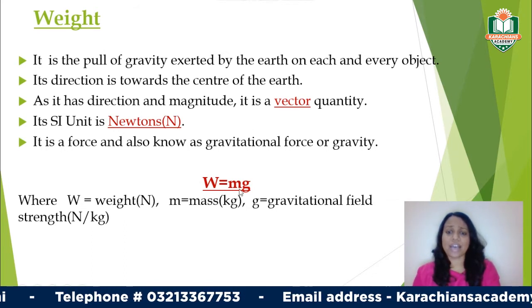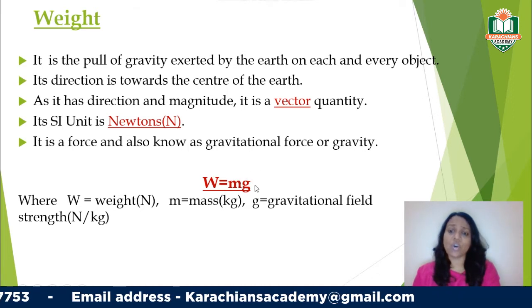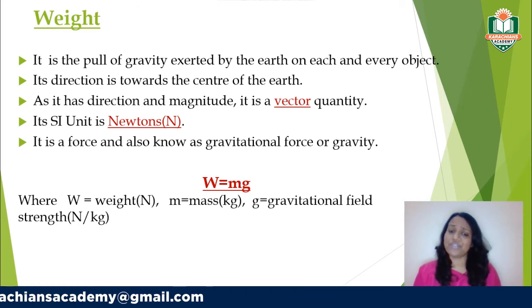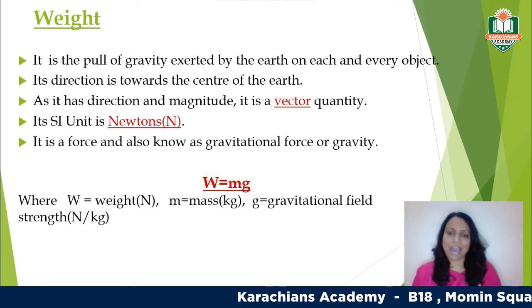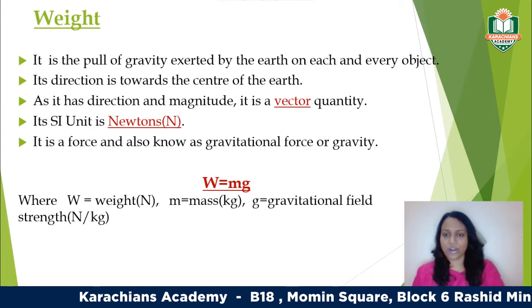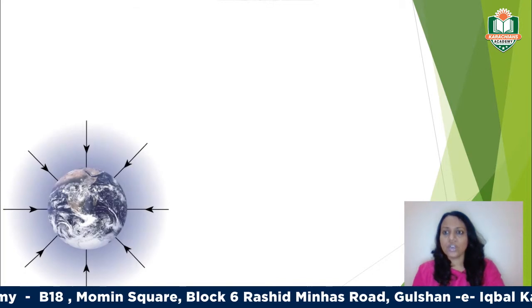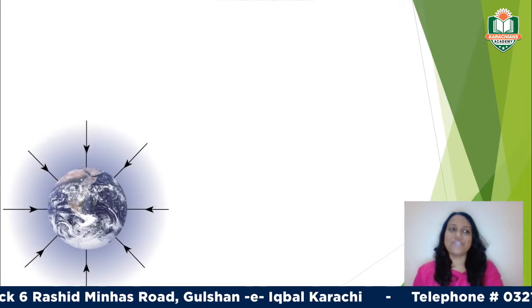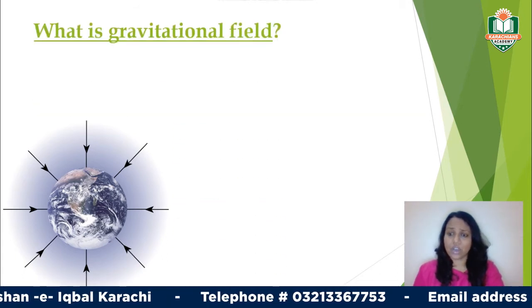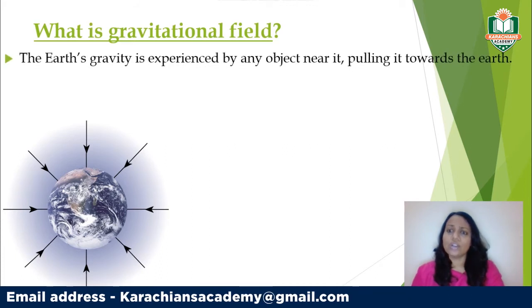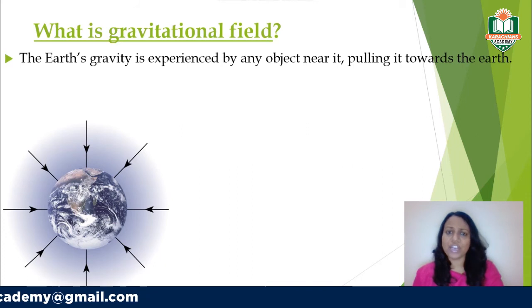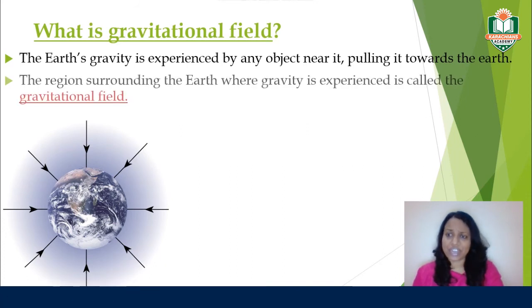To find weight, you use the formula: Weight = mg, where m is your mass and g is your gravitational field strength. Gravitational field strength is a constant value for a particular place. For the earth, the gravitational field strength is 9.81 N/kg, meaning for every 1 kg the force acting on it is 9.81 N. For easier calculations it is taken as 10 N/kg. The gravitational field is the region surrounding the earth where gravity is felt — everything at the surface is pulled towards the center of the earth.